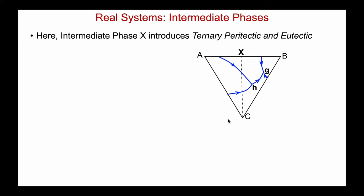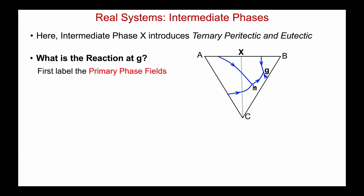In the next example, the intermediate phase X introduces a ternary peritectic and eutectic reaction. Let's see if we can identify these. First, what is the reaction at G? The first step is to make sure we can correctly label all of the primary phase fields. The primary phase field for A is bounded by these liquidus valleys. For X, this must be the primary phase field of X. For B, up in this top right corner, we'll shade that. And finally, this is the primary phase field of C.